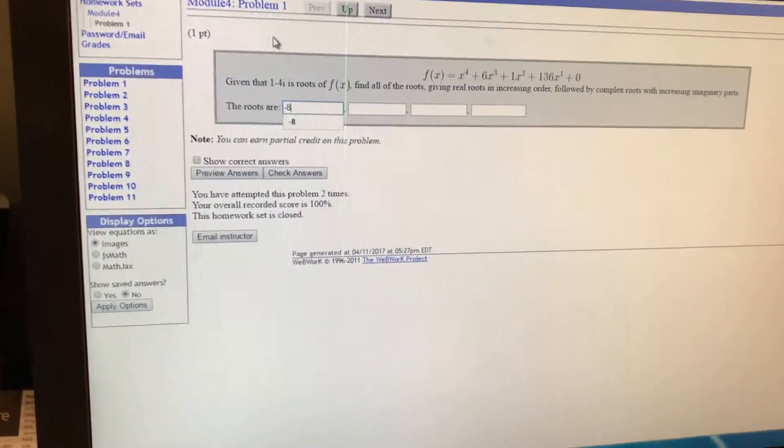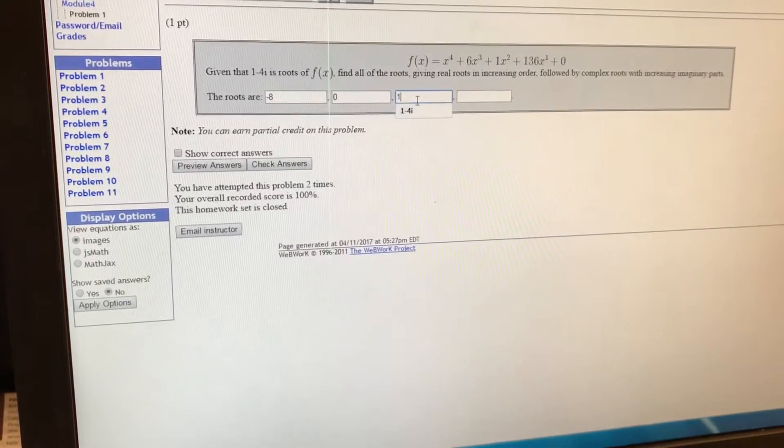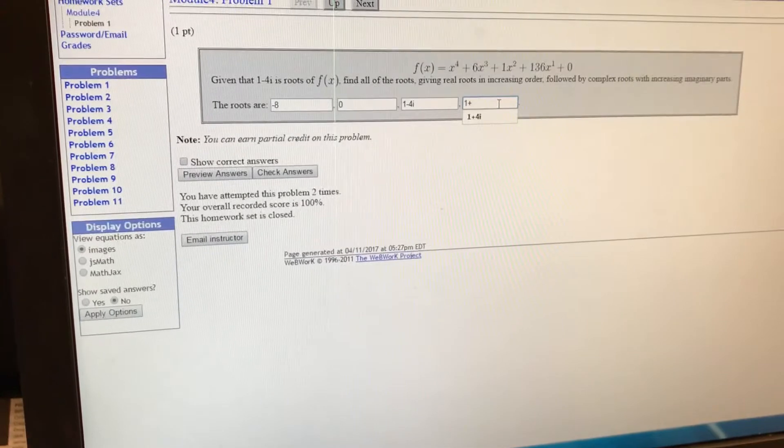So we're going to type these numerals into the WebWork: negative 8, 0, 1 minus 4i, and then 1 plus 4i.